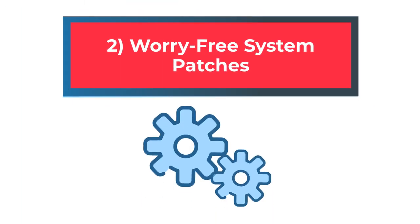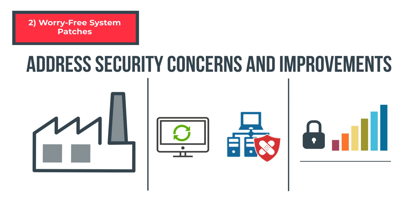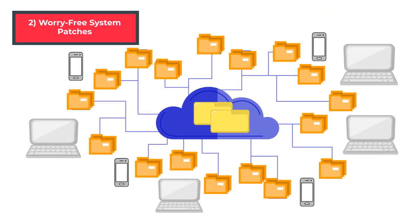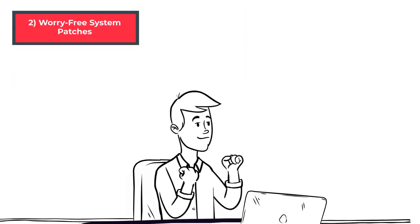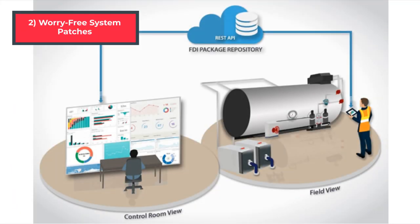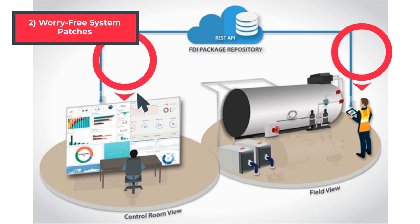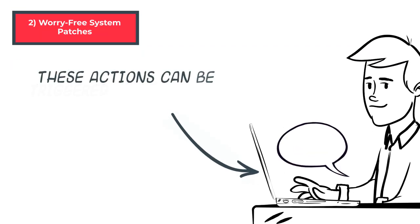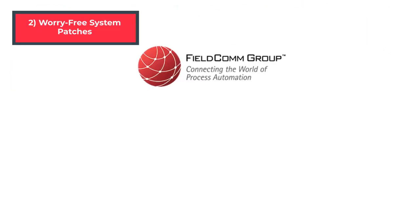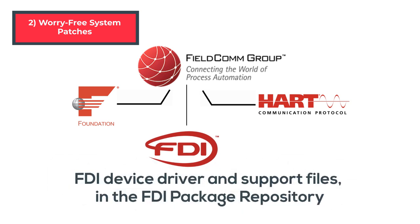Benefit 2: Worry-free system patches. Throughout the lifetime of systems, occasional patches and upgrades are required to address security concerns and improvements. The FDI Device Package Repository can automatically download appropriate EDD and FDI device packages when patches or upgrades are completed, which saves time and effort. During device replacement or upgrade, a built-in FDI package update module in the host application or handheld communicator will securely connect to the FDI package repository. On successful connection, it will search the repository and download the appropriate package version onto the system. These actions can be triggered on-demand or automatically to keep the system up to date. FieldCom Group maintains the API as well as registered Foundation Fieldbus, HART, and FDI device driver and support files in the FDI package repository.